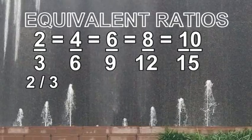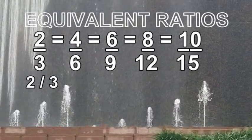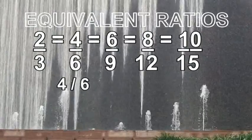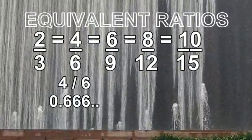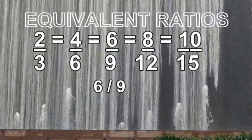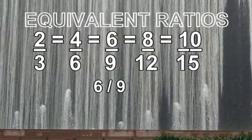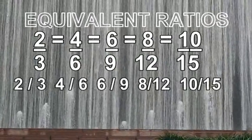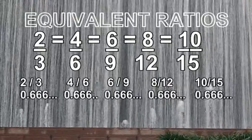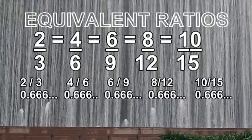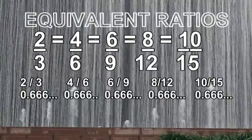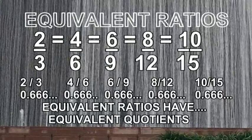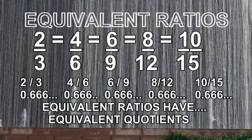Now let's look at some properties of equivalent ratios. If you take the quotients of equivalent ratios, such as 2 divided by 3 and 4 divided by 6, they always come up with the same answer. If you divide the numerator by the denominator, you'll always get 0.666. One property of equivalent ratios is they have equivalent quotients. The equivalent ratios of 2 over 3 all have a quotient of 0.666.